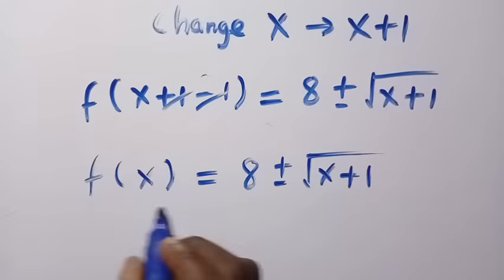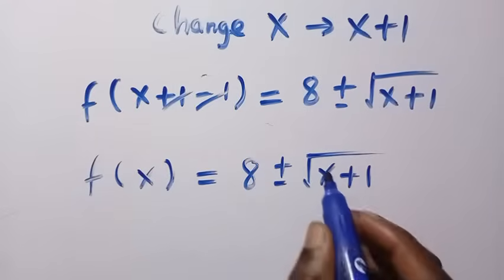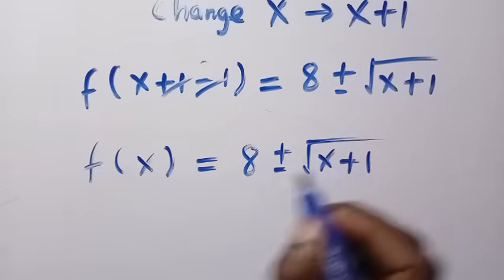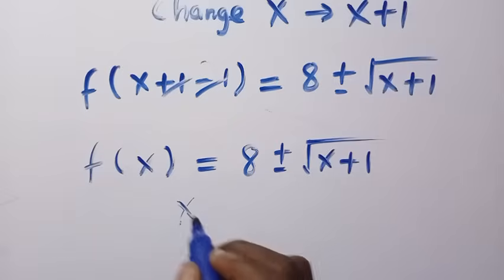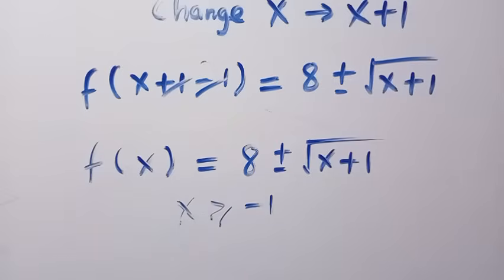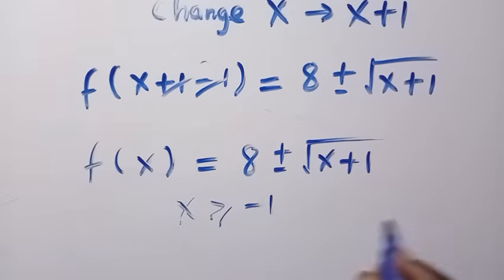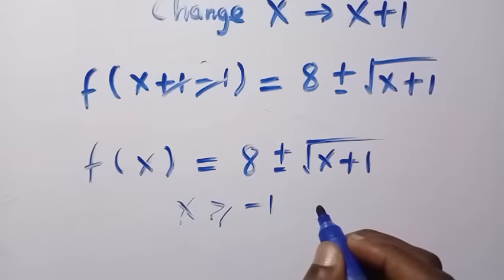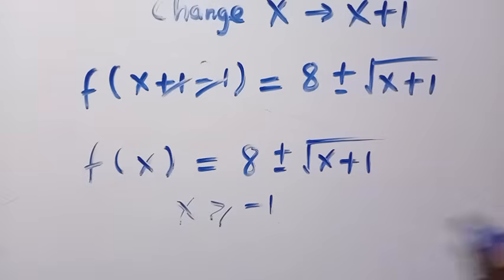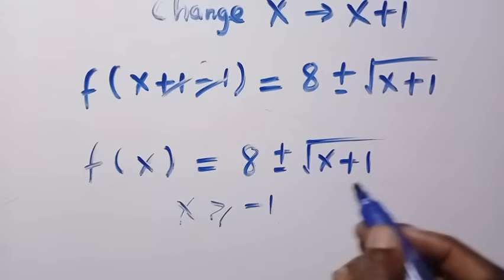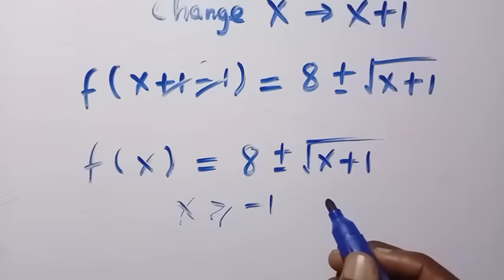This is the value for f of x, but with a condition: for the square root to be real, x must be greater than or equal to minus 1. So the domain starts from minus 1, then 0, 1, 2, and so on. If we use values like minus 2, the result becomes complex, and we are after real solutions.